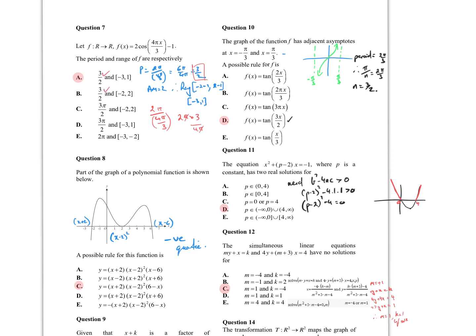For the range, we know the graph normally goes from negative 2 to 2. We subtract 1, giving negative 3 to 1. So A is the correct response.